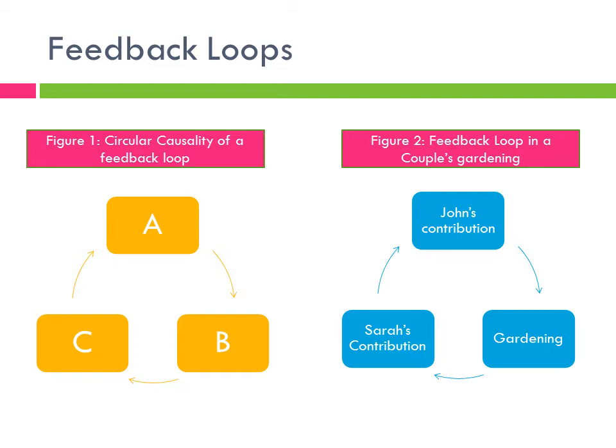Figure 2 shows a similar cybernetics feedback loop of a couple. In this case, John's gardening efforts, i.e. his output, affect how much gardening gets done, which subsequently affects how much gardening Sarah has to do, which then feeds back, i.e. input, to how much gardening John thinks still needs to be done, and so on.